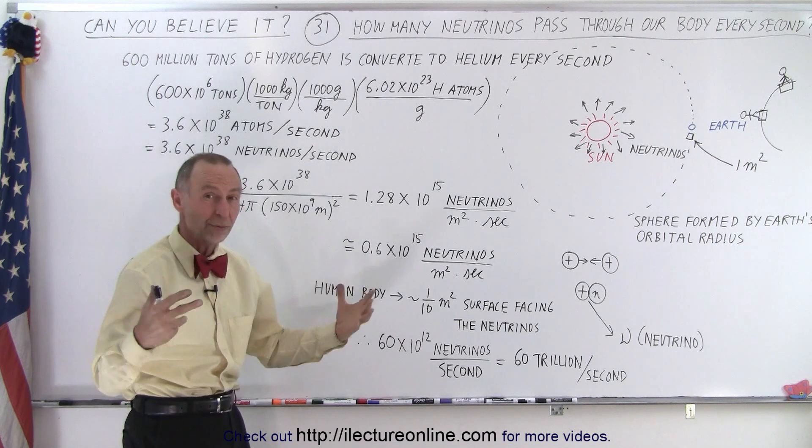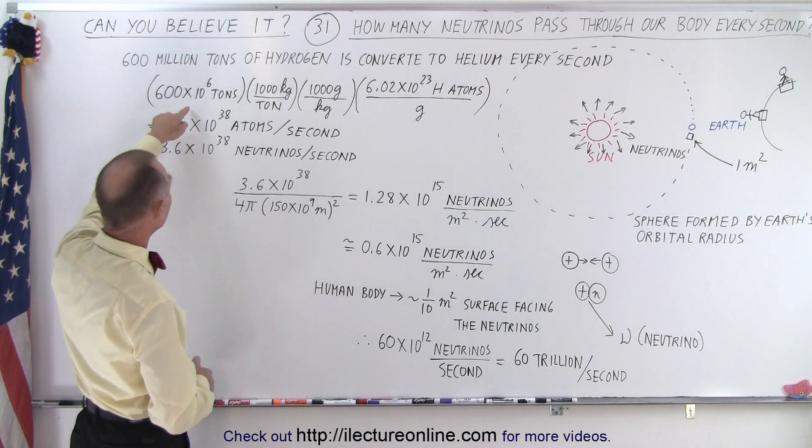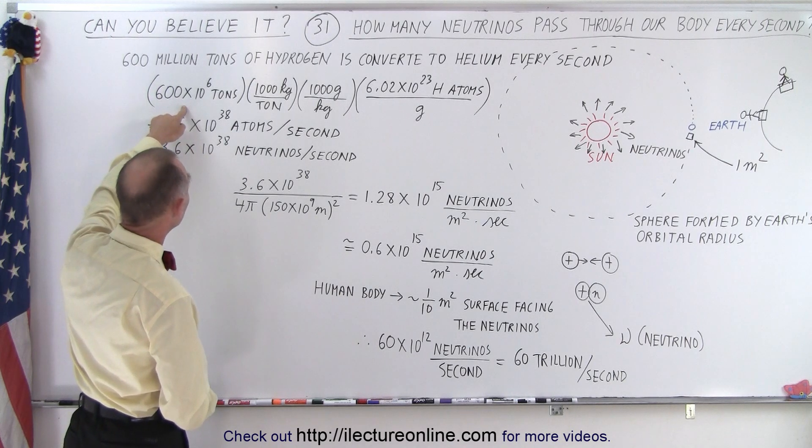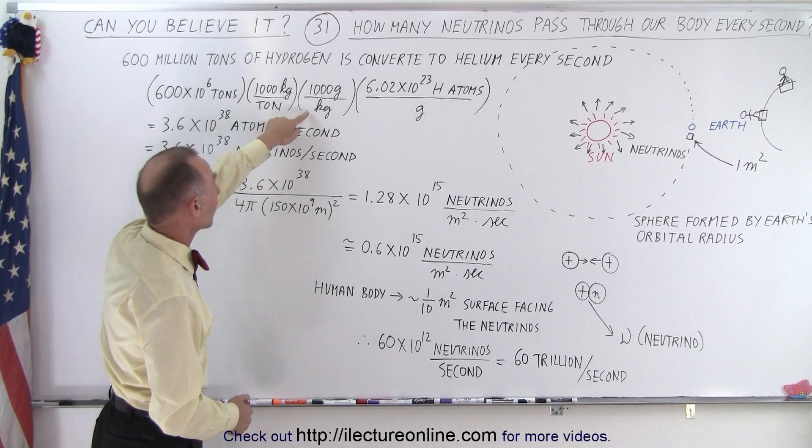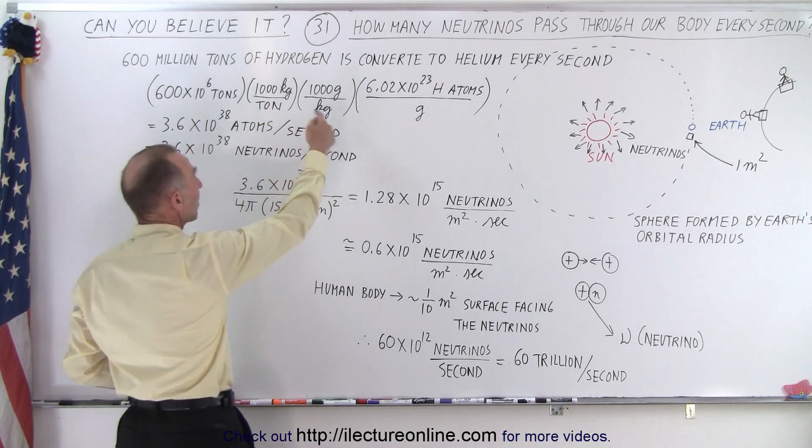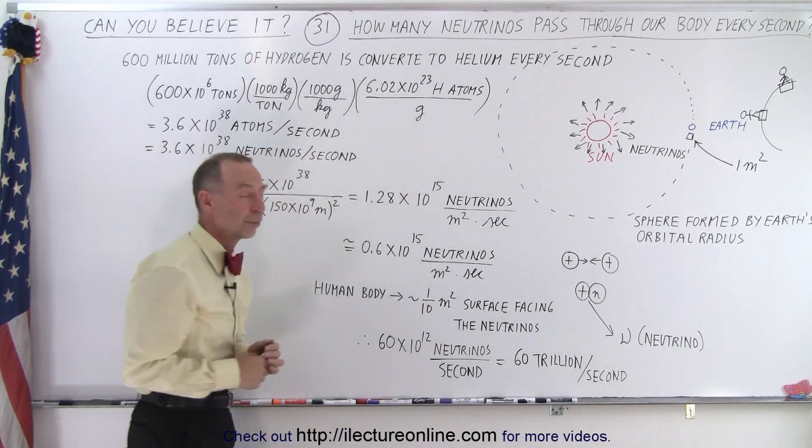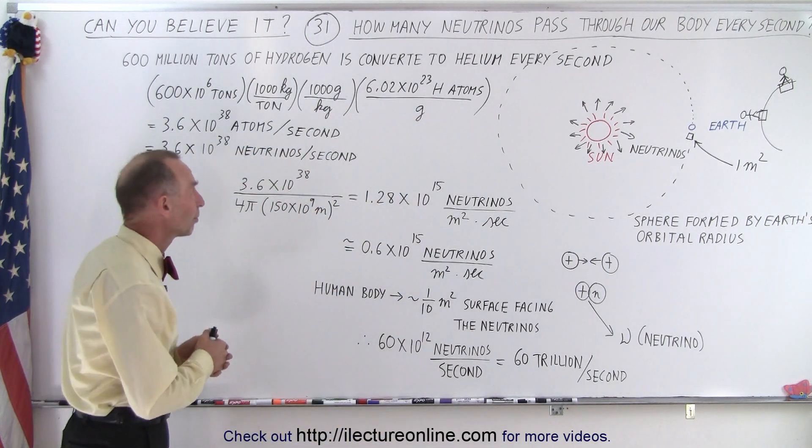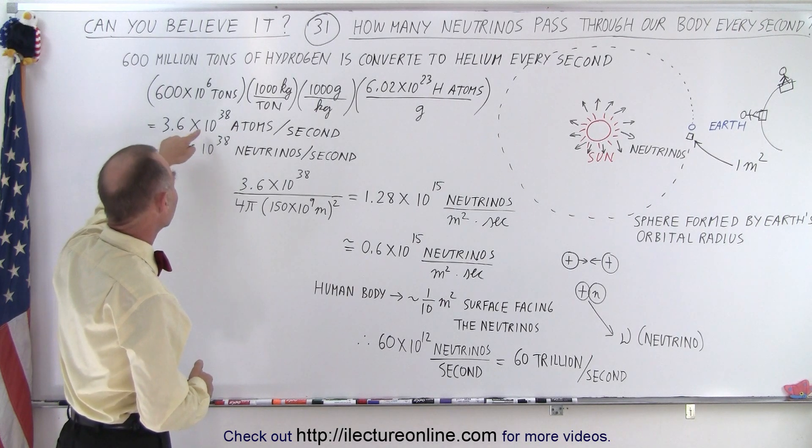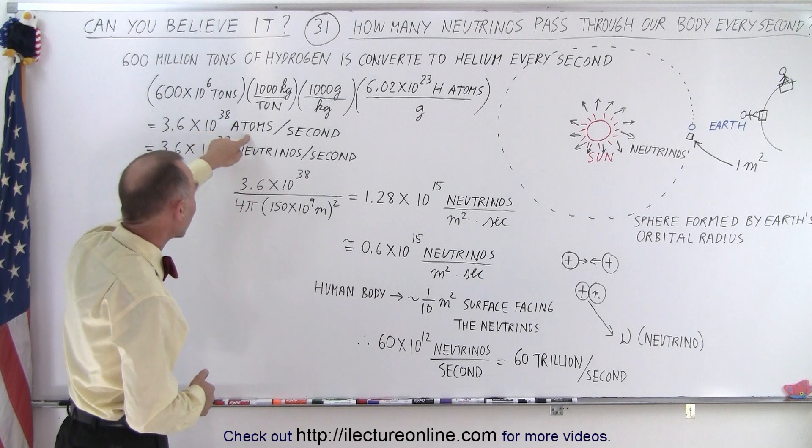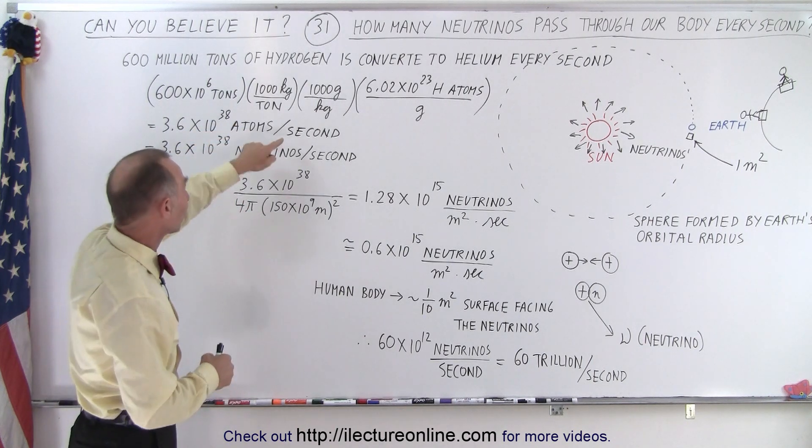Now, 600 million tons of hydrogen is converted to helium every single second in the Sun. That's an enormous amount of hydrogen that gets converted to helium. How many atoms is that? Well, we multiply 600 million tons times a thousand kilograms per ton, a thousand grams per kilogram, and for every gram of hydrogen we have Avogadro's number, or 6 times 10^23 hydrogen atoms per gram.